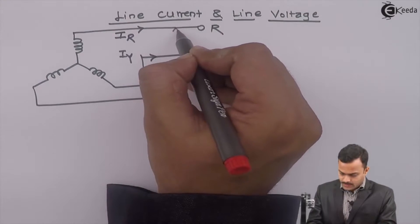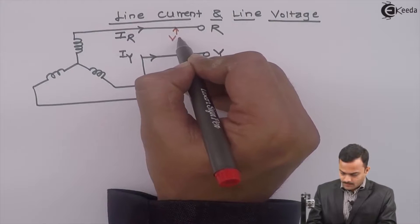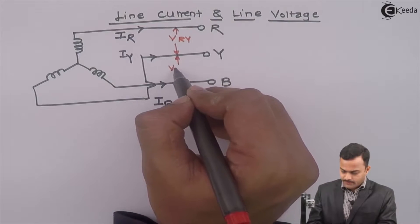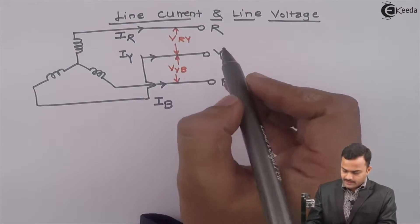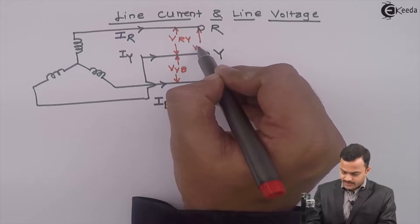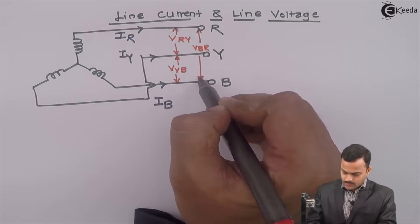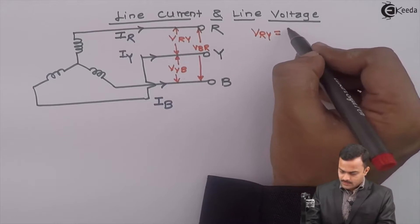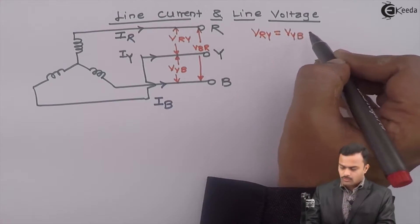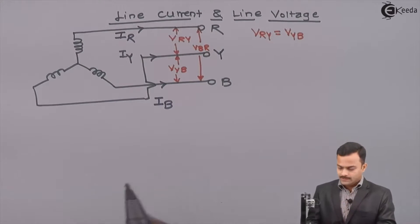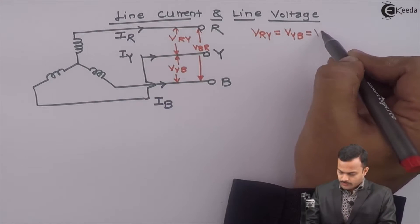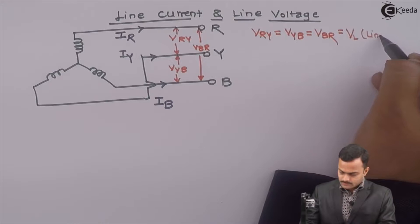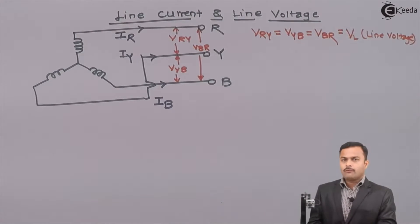Voltage between two lines is called as line voltage. So here it is VRY, between Y and B it is VYB, and finally between R and B it is VBR. So VRY equals VYB equals VBR, which we call as VL — line voltage.